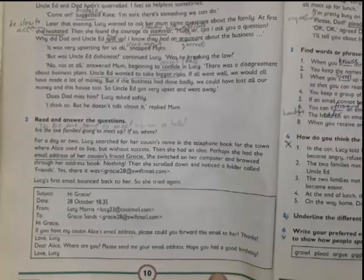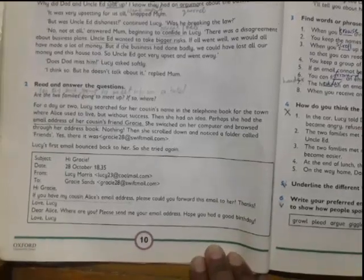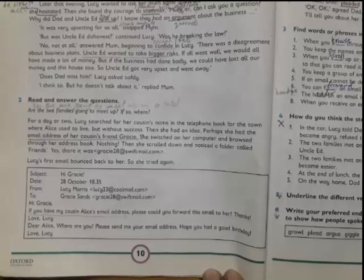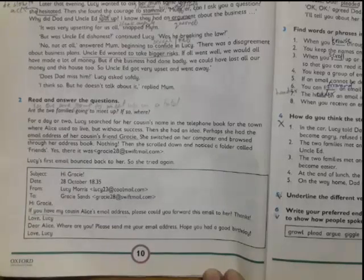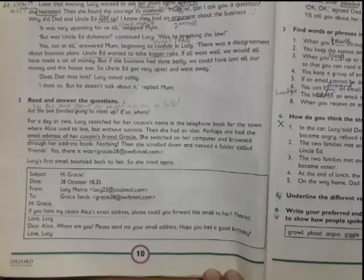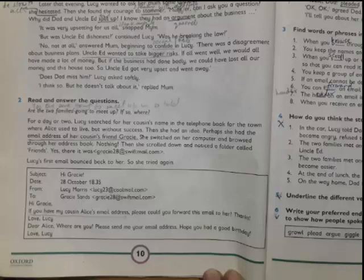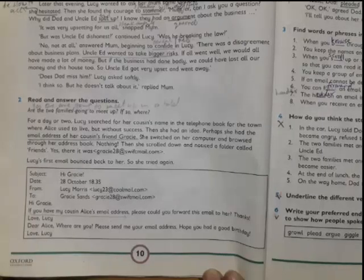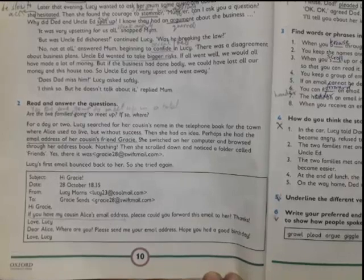Now come to the second part. Again the question which I'm going to give the answer at the end, but I am going to read the text first. For a day or two, Lucy searched for her cousin's name in the telephone book for the town where Alice used to live, but without success. Then she had an idea. Perhaps she had the email address of her cousin's friend Gracie. She switched on her computer and browsed through her address book. Nothing. Then she scrolled down and noticed a folder called friends. Yes, there it was.